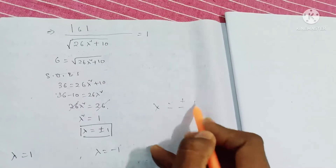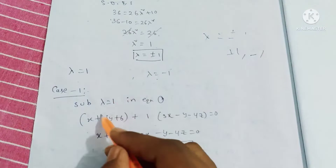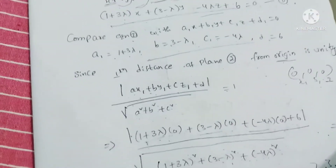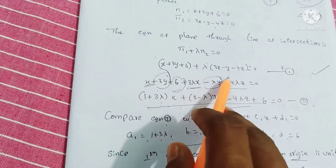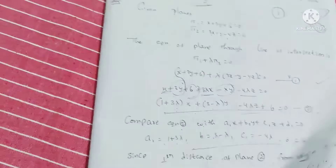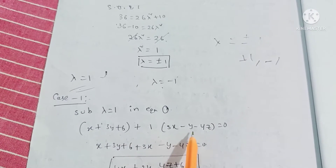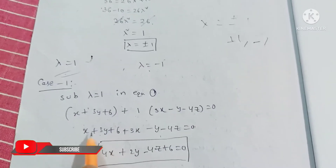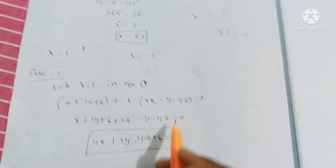Case 1: lambda equals 1. Substituting in equation 1: x plus 3y plus 6 plus 1 into (3x minus y minus 4z) equals 0. So x plus 3x equals 4x, 3y minus y equals 2y, minus 4z, plus 6 equals 0. Therefore 4x plus 2y minus 4z plus 6 equals 0.